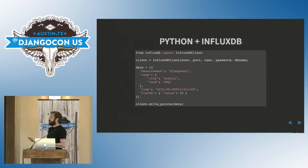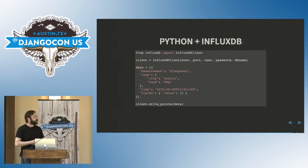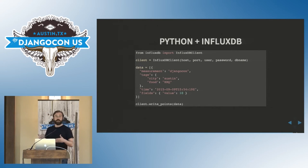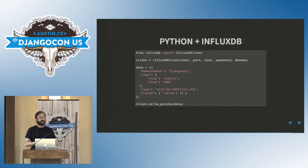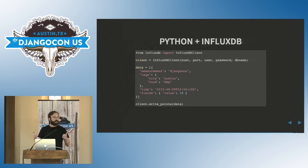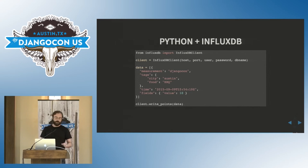And then InfluxDB is very similar, but they take a specific format: the measurement name, whatever arbitrary tags you want to attach, the time value, and then what the value of the field was. So for example, giving Django a 10 out of 10, and attaching that it was in Austin and that barbecue is the predominant food.